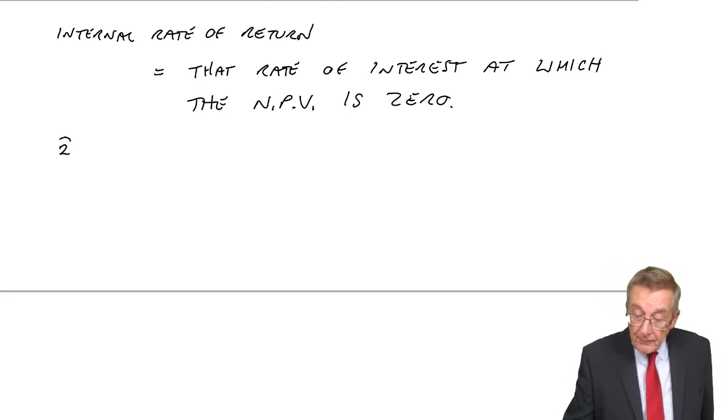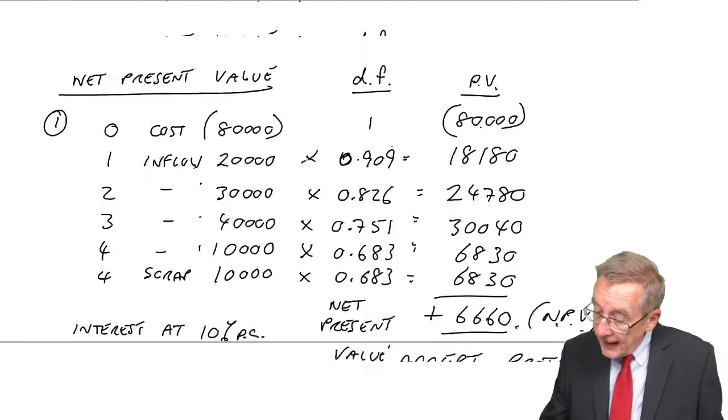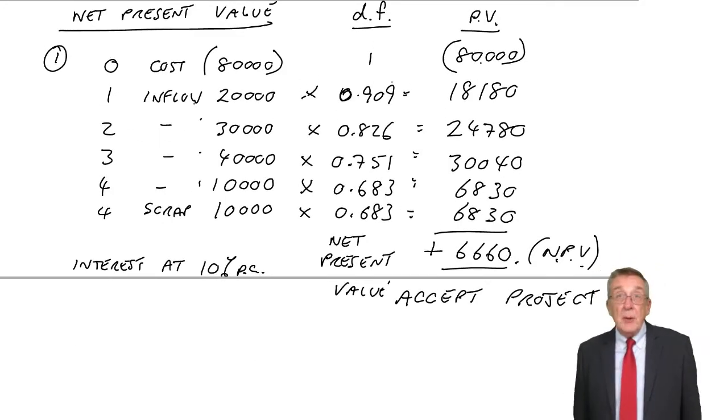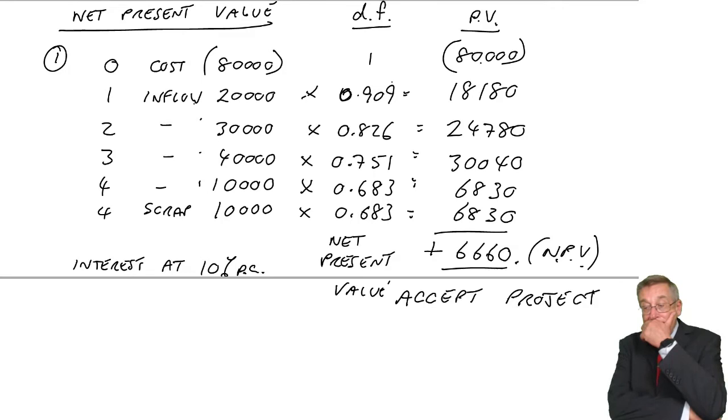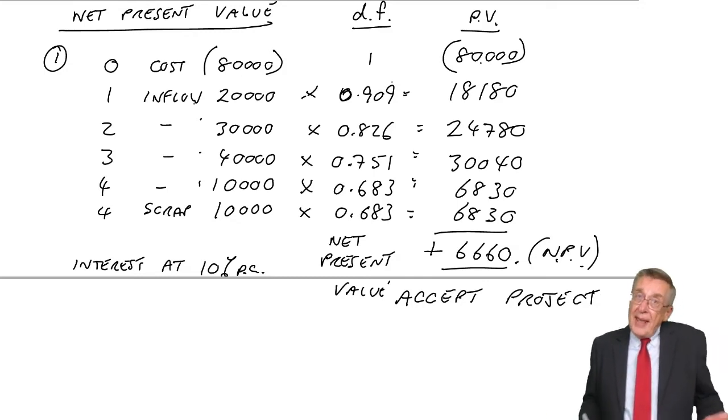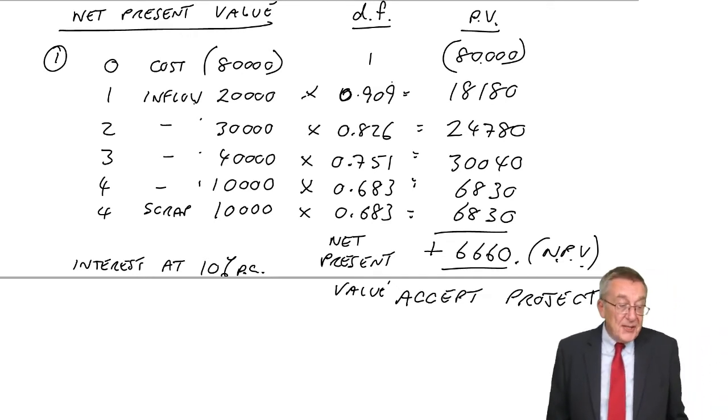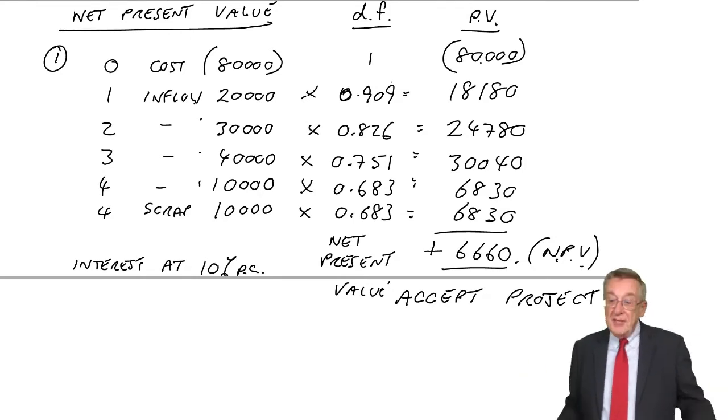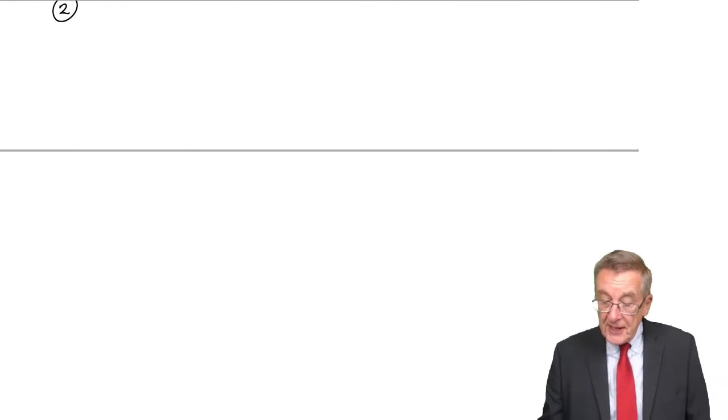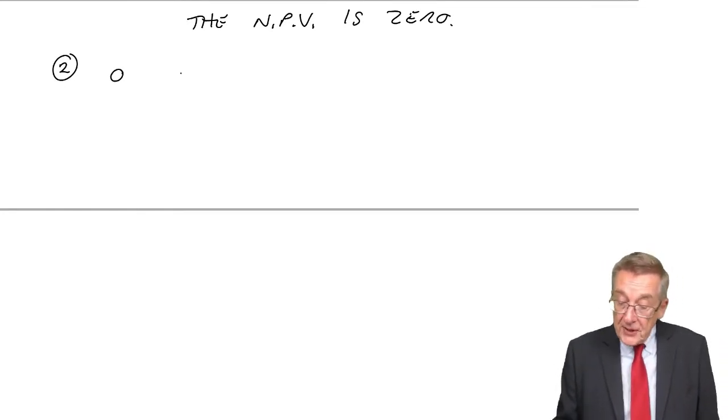I'm going to do example two, using the figures from example one. We think the interest is 10%, we've got a net present value of 6,660. To get a net present value of zero, for the project to be less worthwhile, the rate of interest will be higher. Effectively, we make a guess. Example two has said, calculated at 15%. So let's redo it at 15% and see if we're lucky.